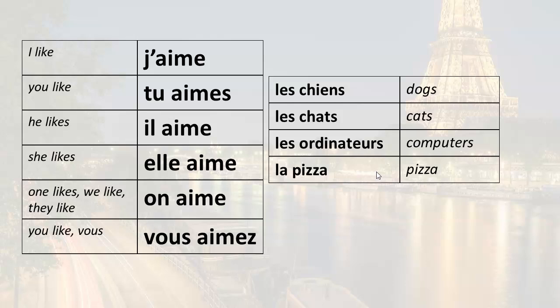Now you like dogs — this is the informal you: tu aimes les chiens. You like cats: tu aimes les chats. You like computers: tu aimes les ordinateurs. You like pizza: tu aimes la pizza.